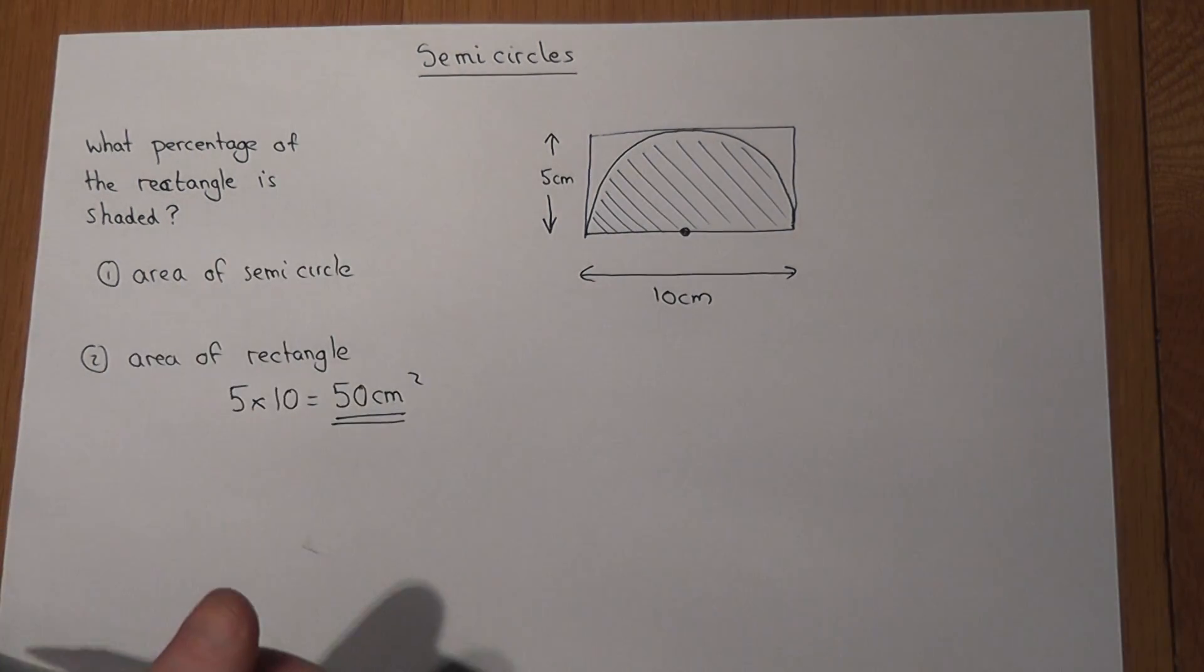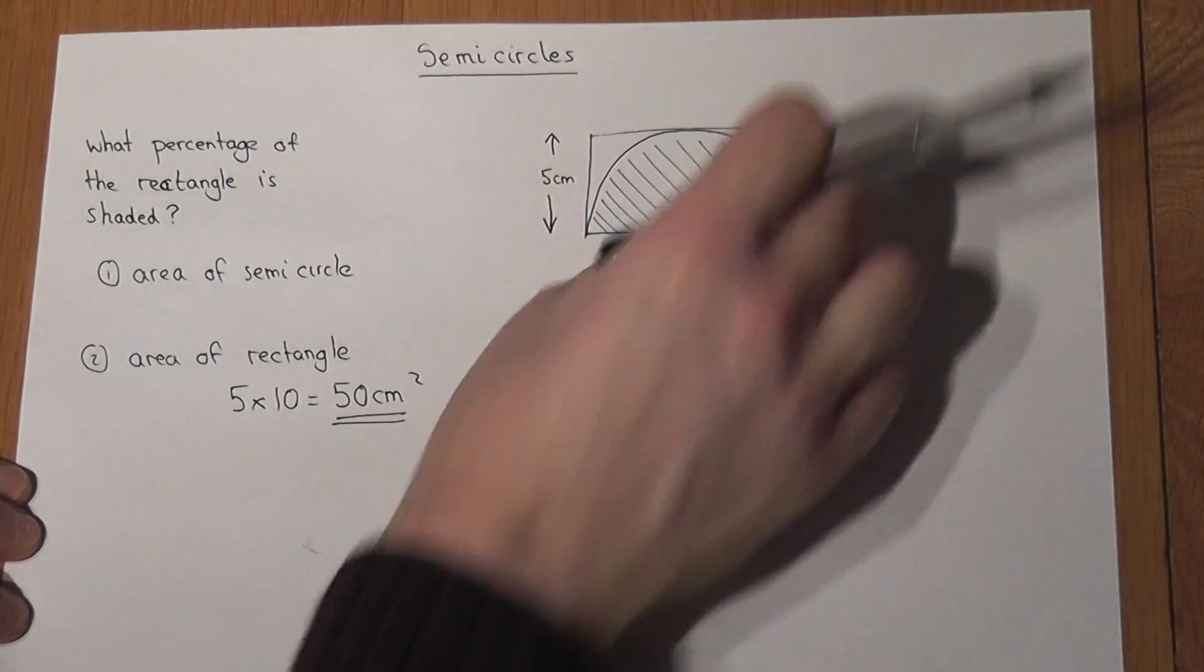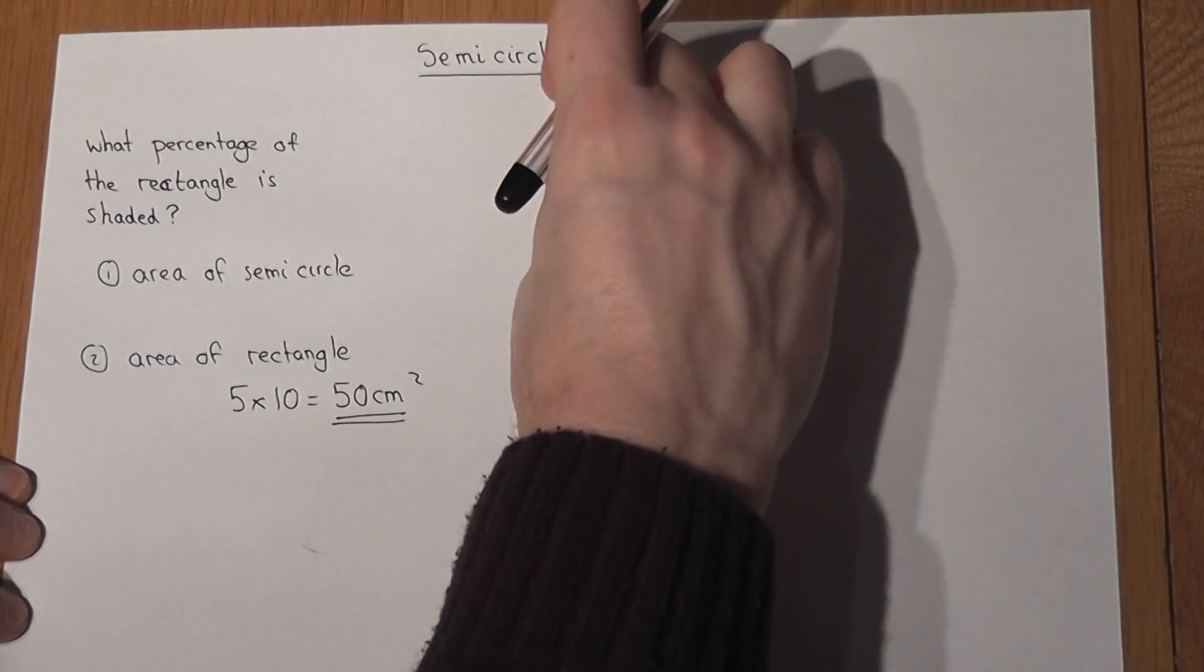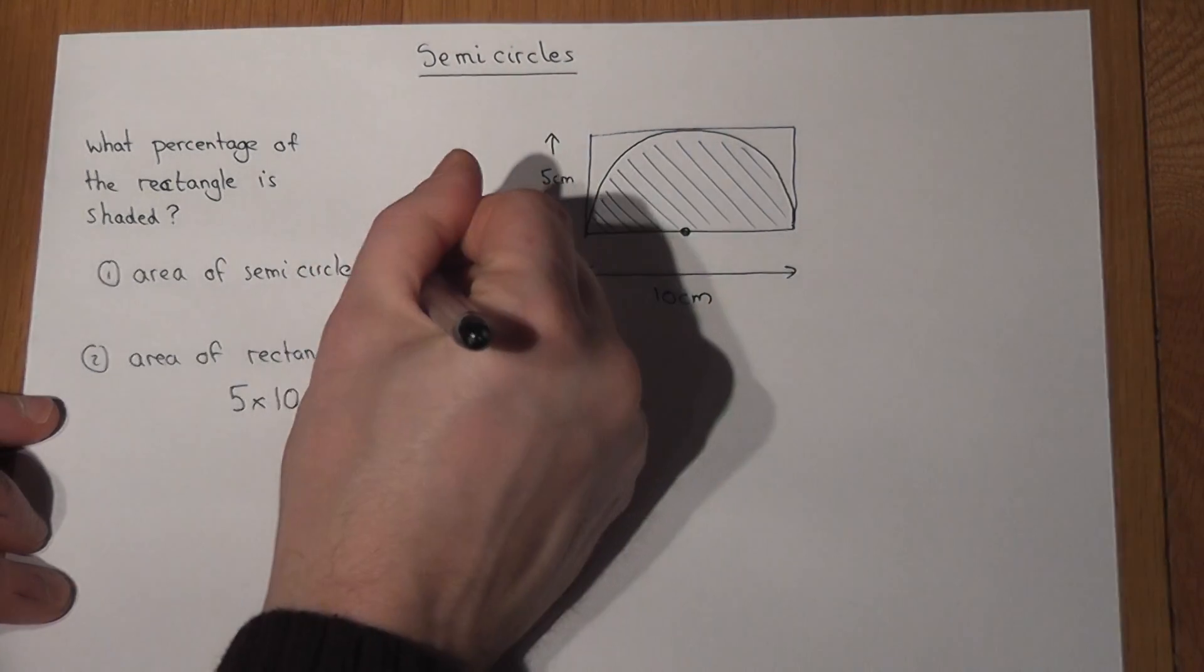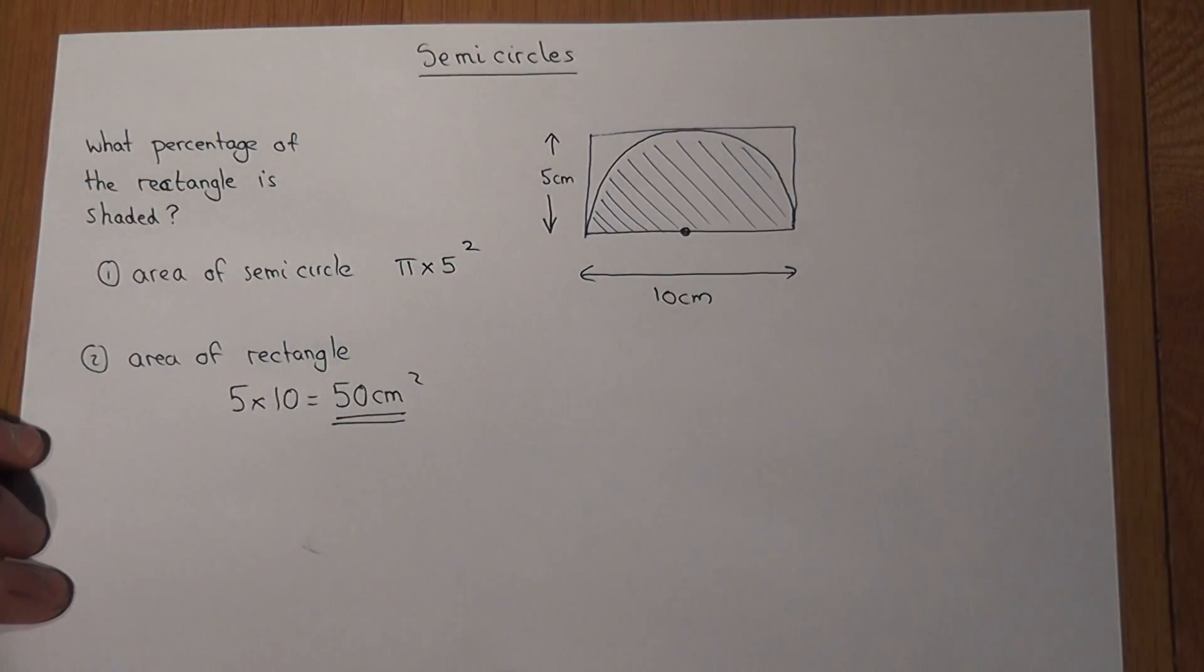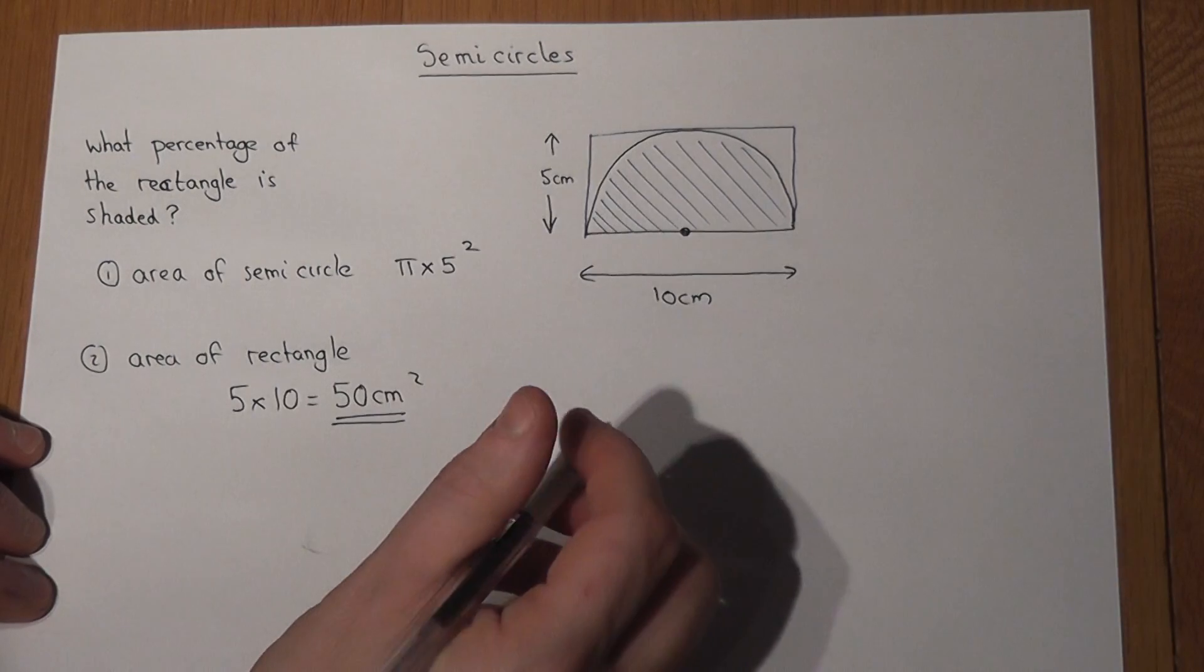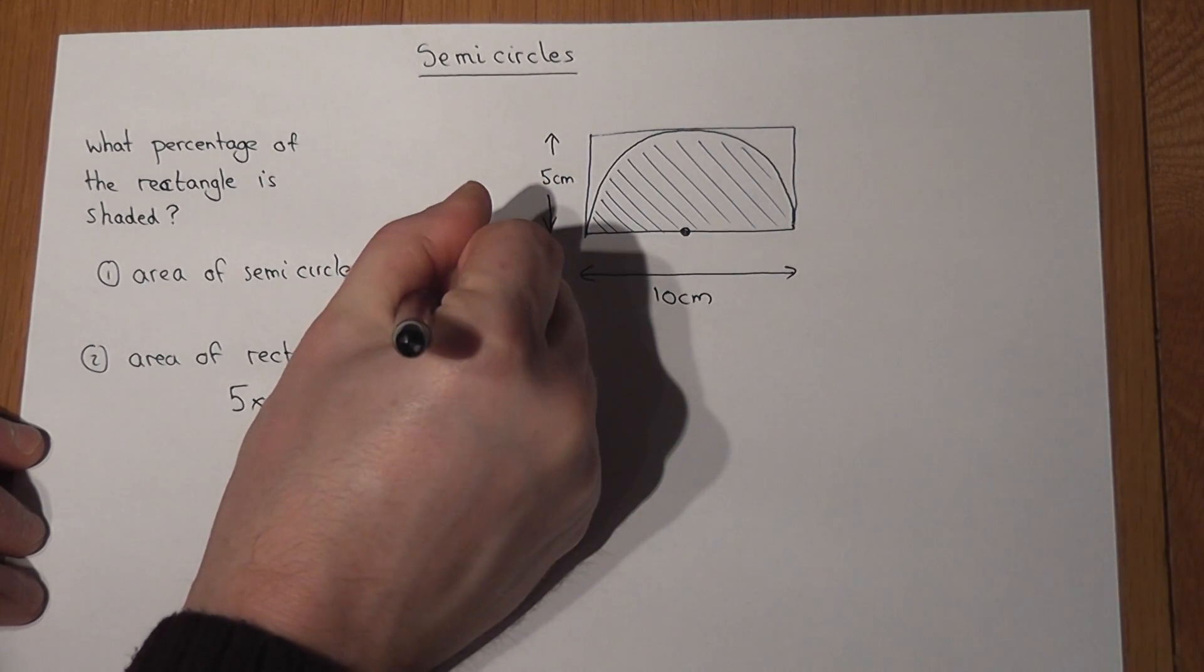Now for the semicircle. This 5, as we've said, has got to be the radius. So if it was a full circle, it would be pi times 5 squared. However it's a semicircle, so I must just divide that answer by 2.